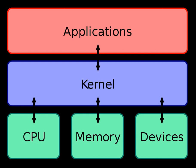The above listed tasks and features can be provided in many ways that differ from each other in design and implementation. The principle of separation of mechanism and policy is the substantial difference between the philosophy of micro and monolithic kernels. A mechanism is the support that allows the implementation of many different policies, while a policy is a particular mode of operation. For instance, a mechanism may provide for user log-in attempts to call an authorization server to determine whether access should be granted. Because the mechanism is generic, the policy could more easily be changed than if the mechanism and policy were integrated in the same module.